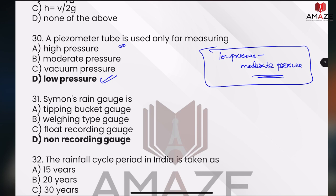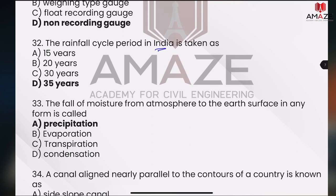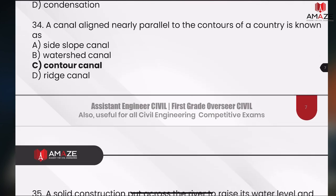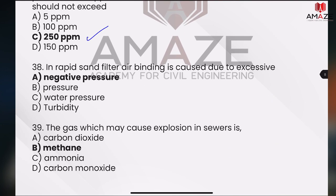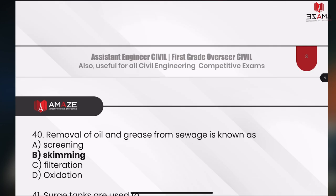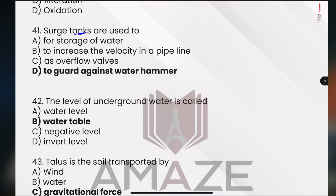So, if you have a negative pressure, it will lower the PSE key because it's a negative pressure — because it's air binding. Now, the explosion in sewers — this gas is methane. Soil and grease treatment is skimming. This is a simple, repeated question.